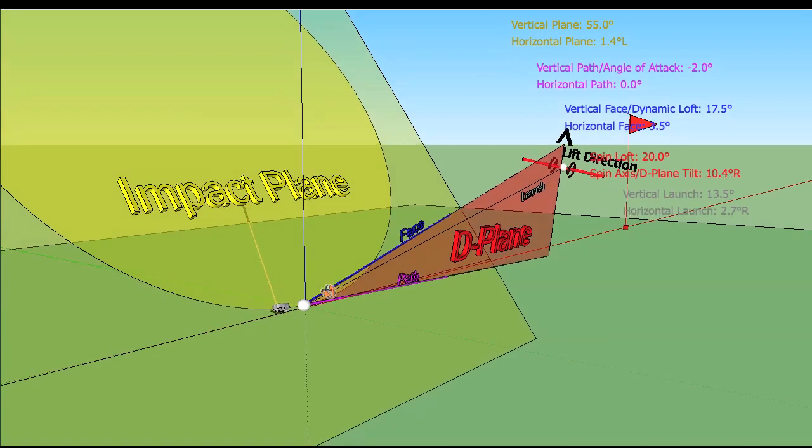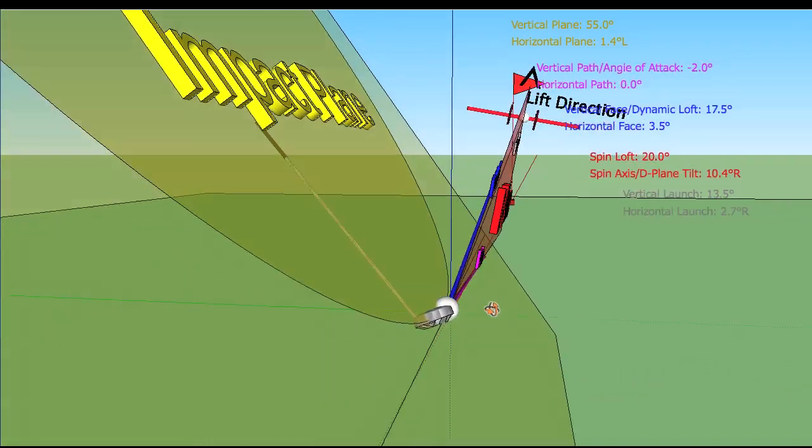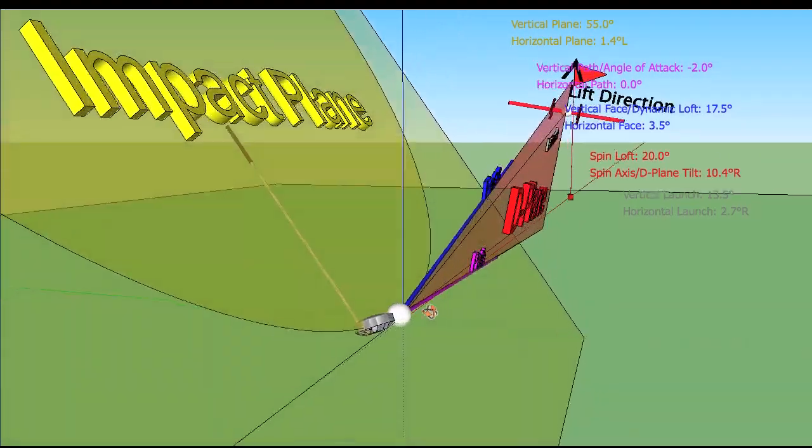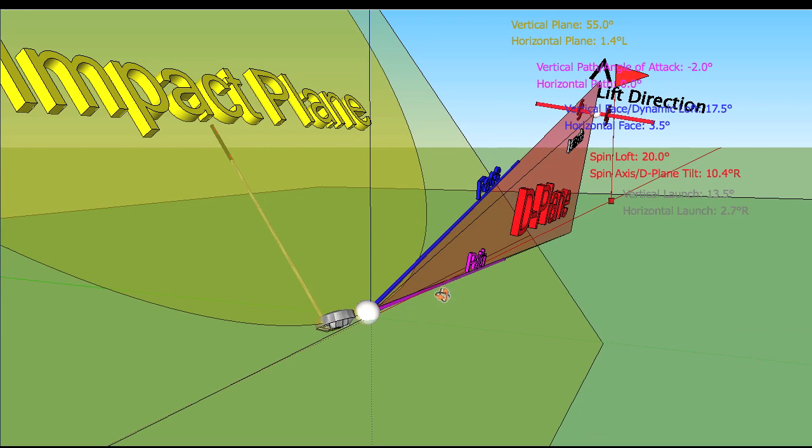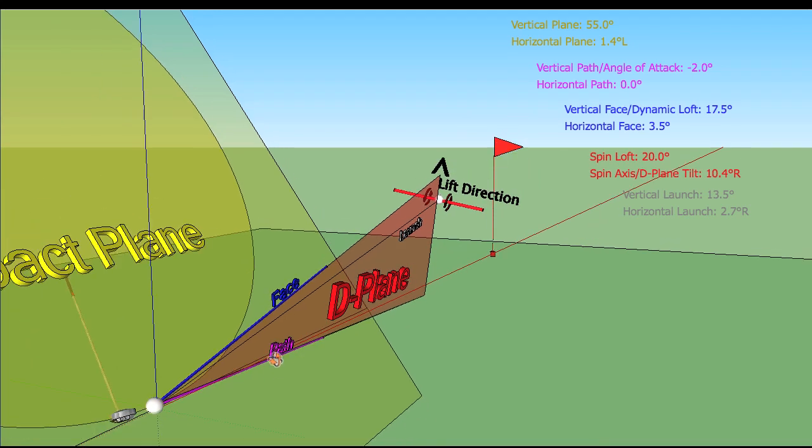If we assume center contact, meaning the shot was hit on the sweet spot, this D-plane will tell us exactly what the golf ball will do when it first launches, how it's going to spin, everything we need to know. Pretty valuable information if you are either looking at it from a playing perspective or a teaching perspective.